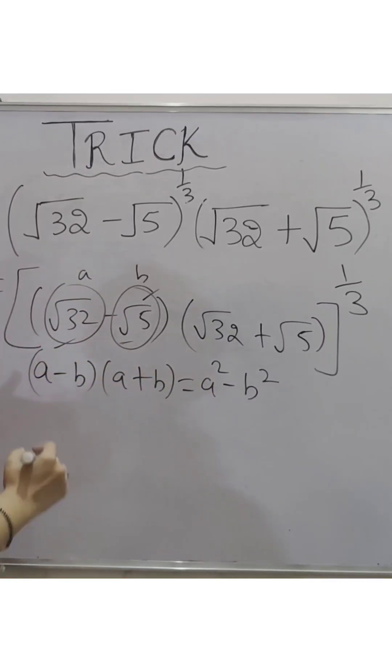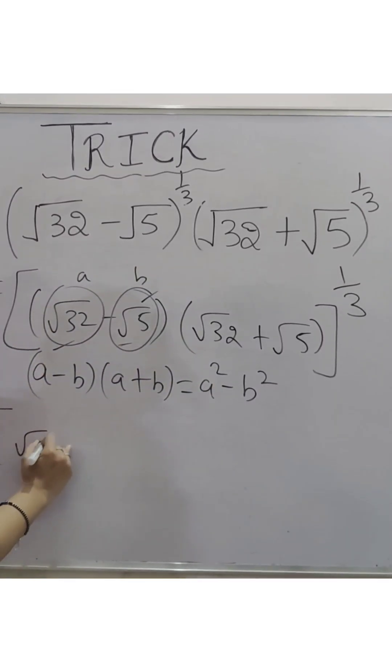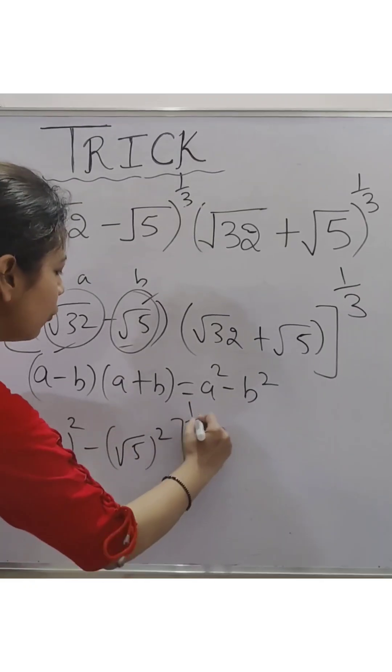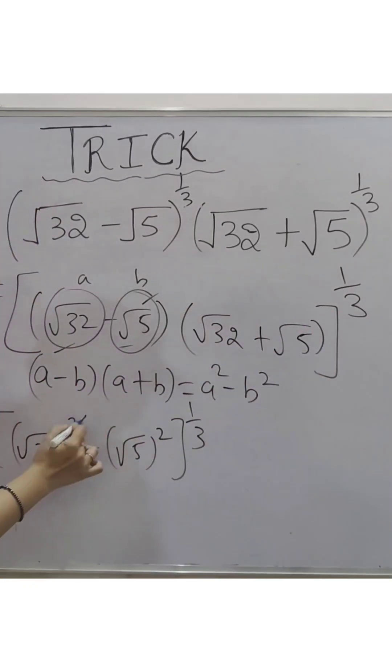your B. This form we insert here, you will get root 32 square minus root 5 square and the whole power remains same. Root can be cut with square,